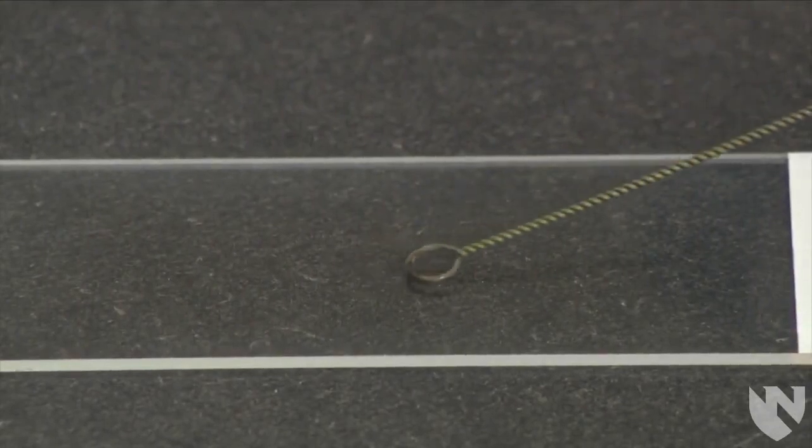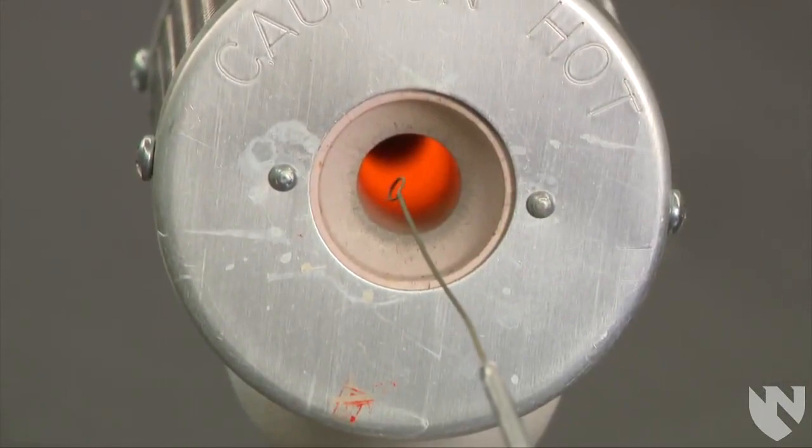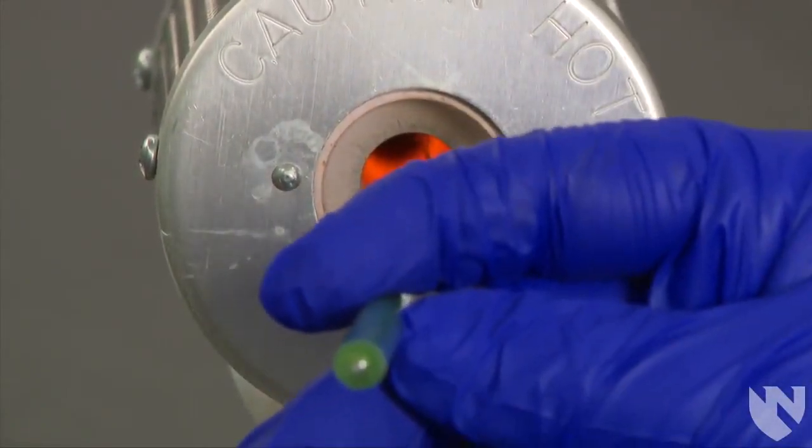Smear the colony on a small area of the clean microscope slide. Sterilize the loop or discard the wooden stick in the biohazard trash.